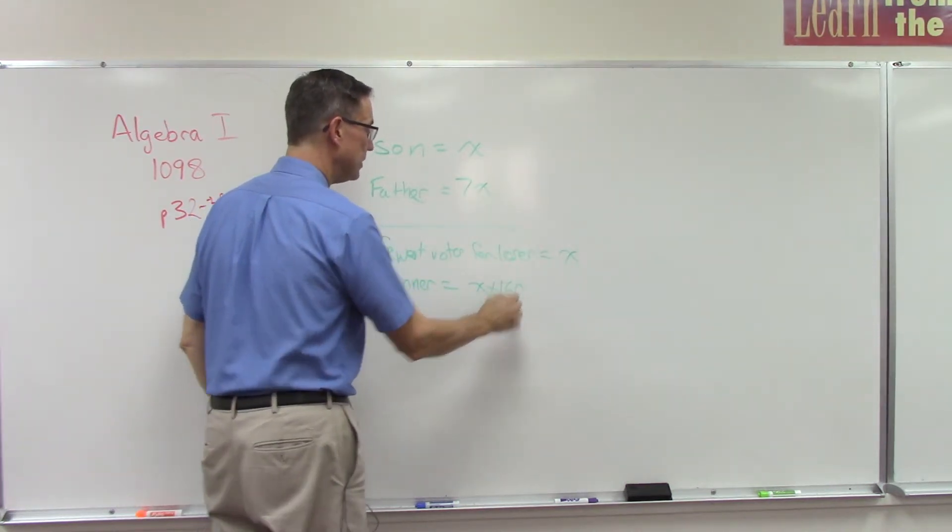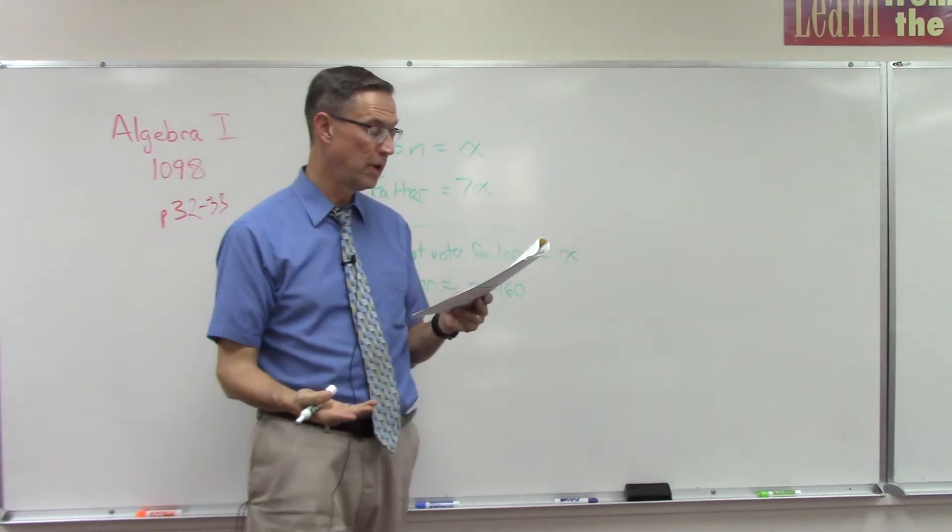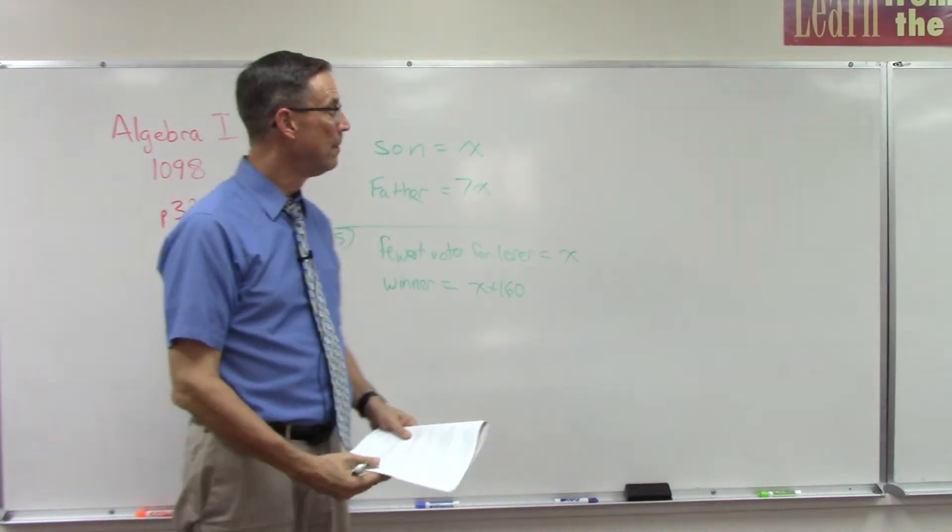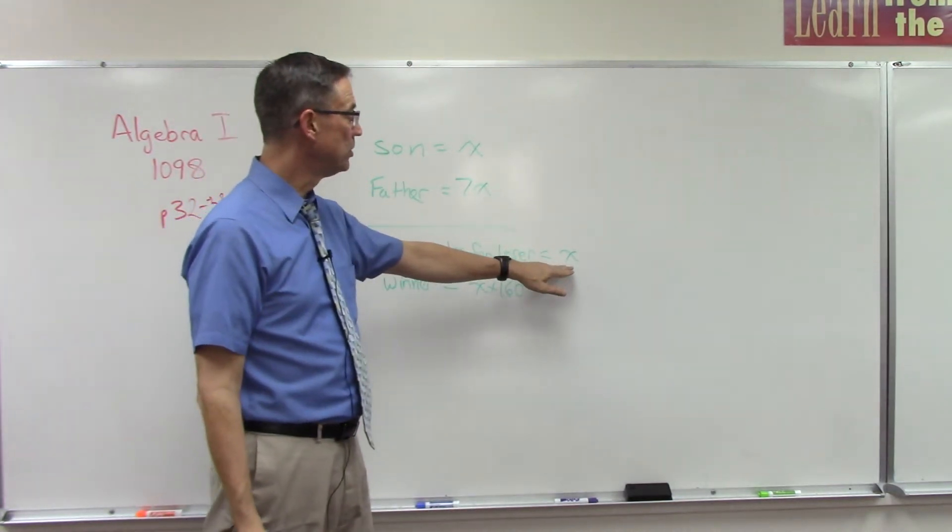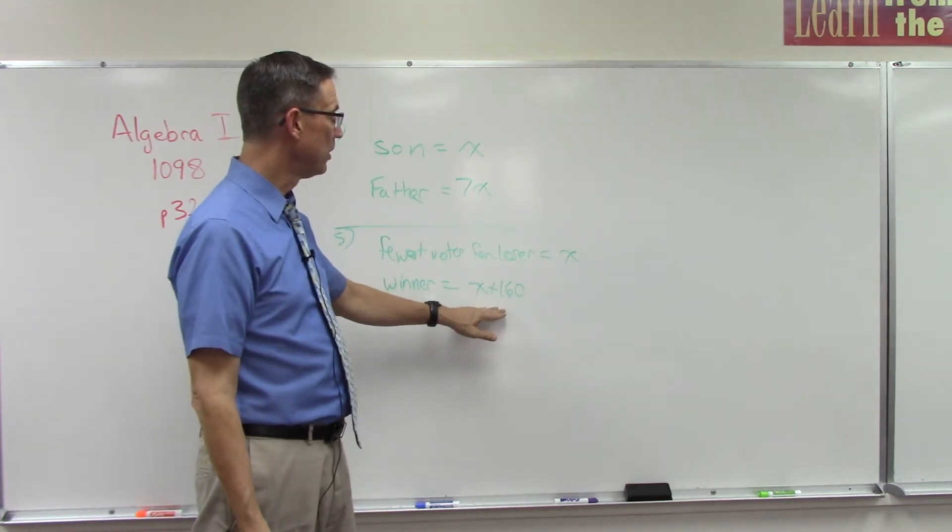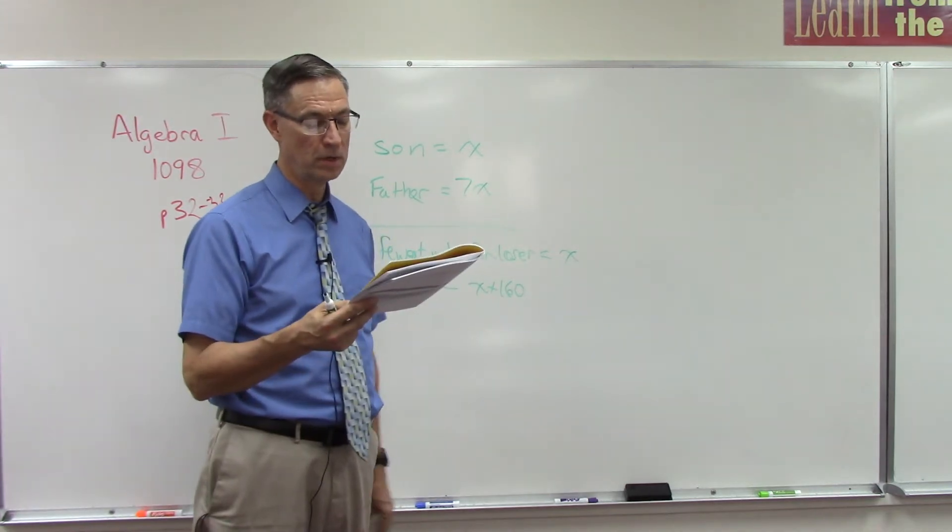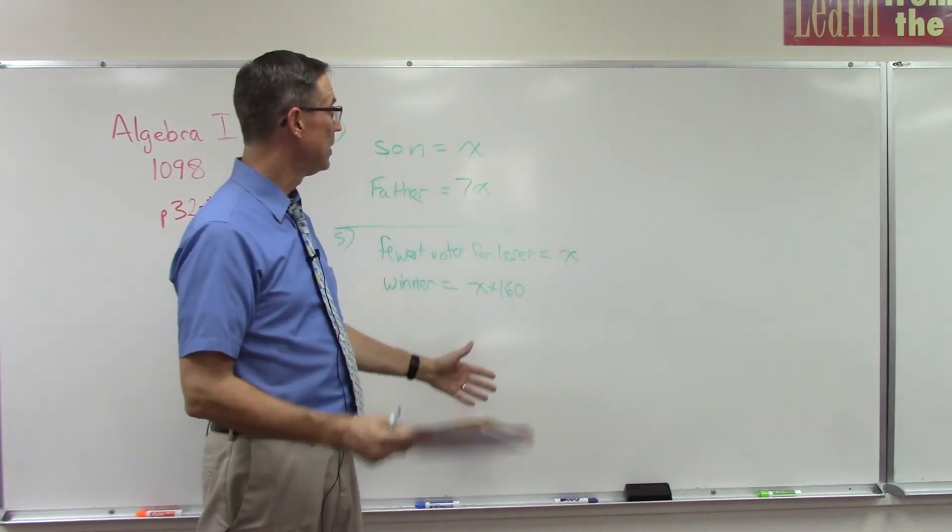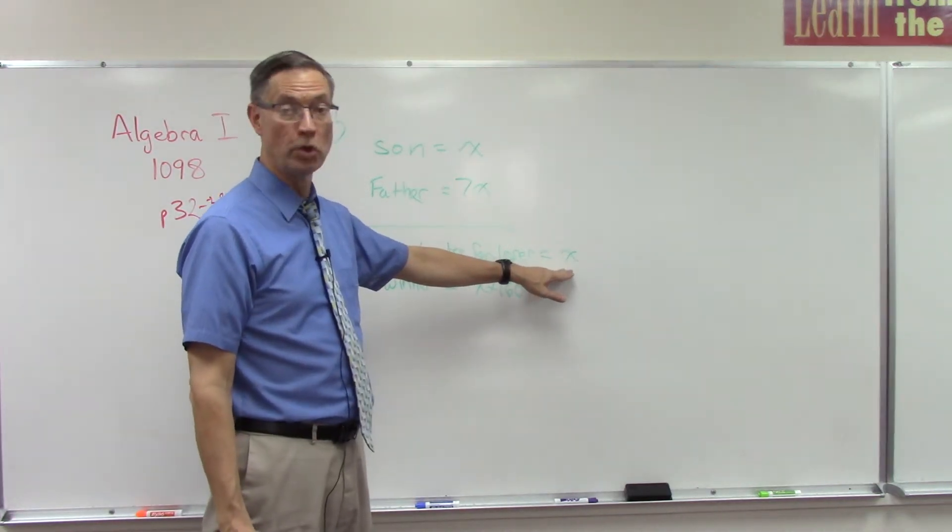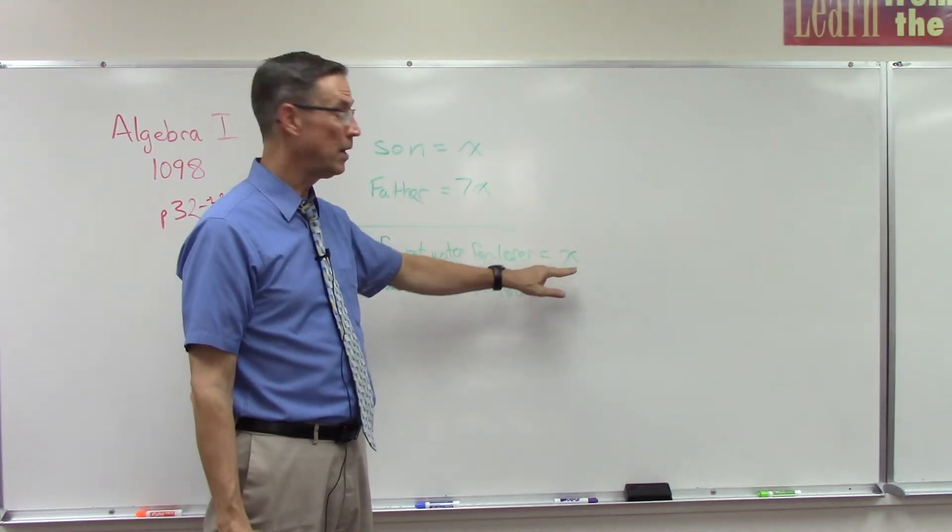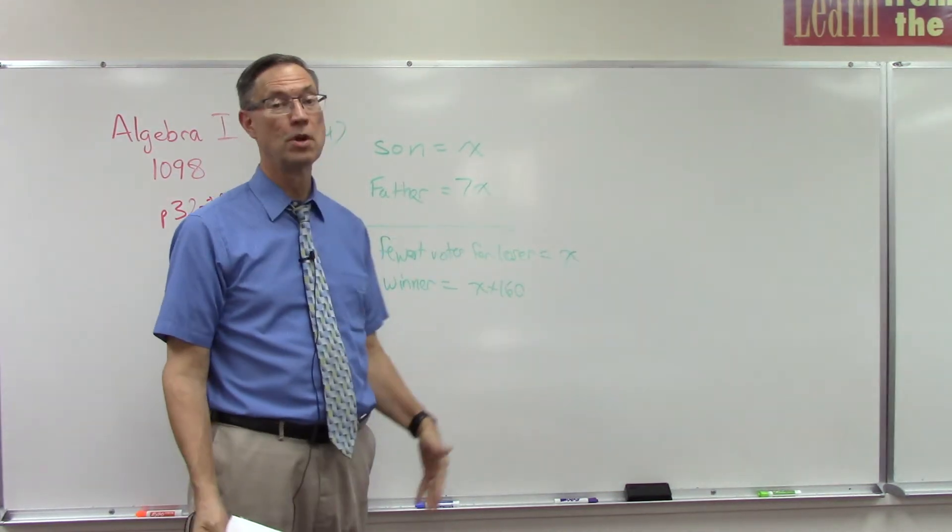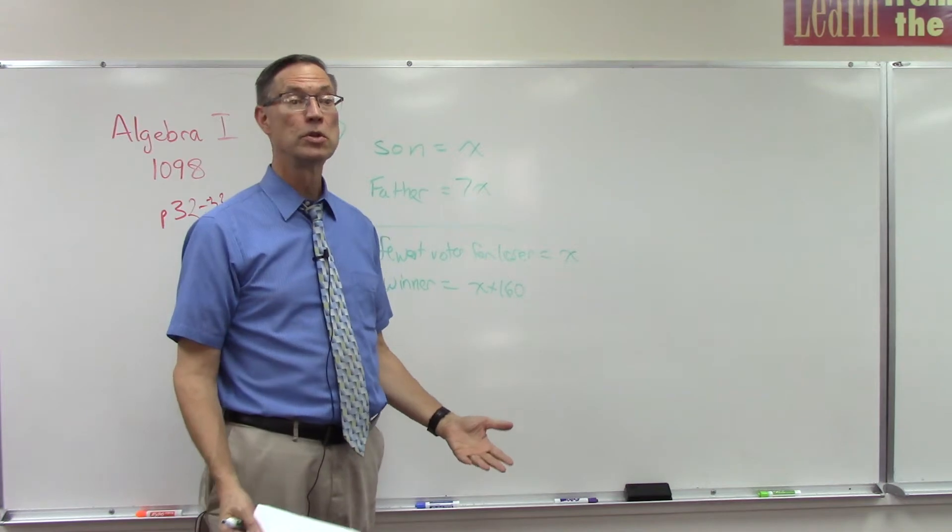We know the total number of votes, so now we can set up an equation to put these two together equals the total votes cast. You see that right there in problem number five. Once you solve, you'll know x - the number of votes the loser got. Add 160 to that, you know how many votes the winner got, and you can check it. If you add those two, you should get the total number of votes.